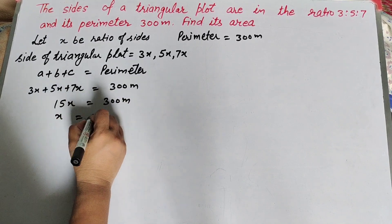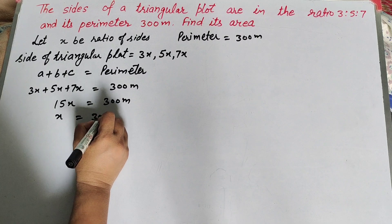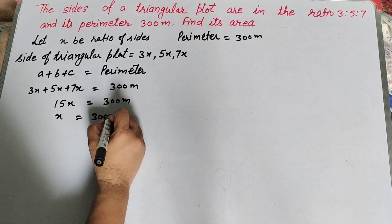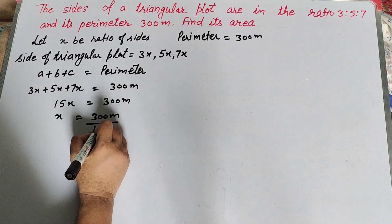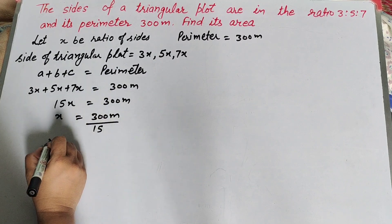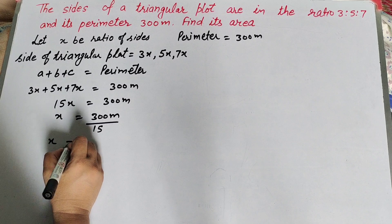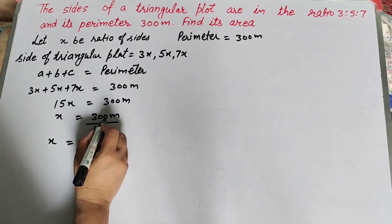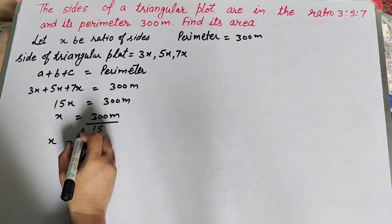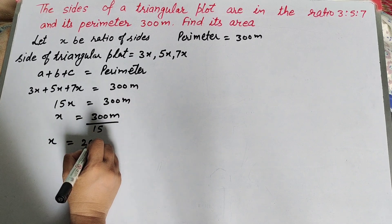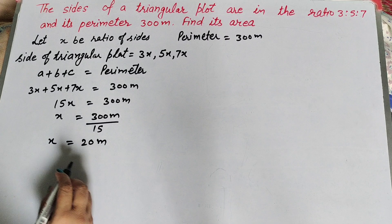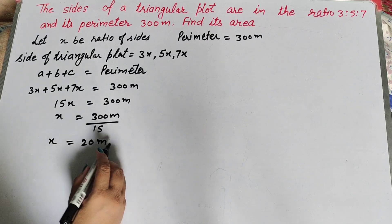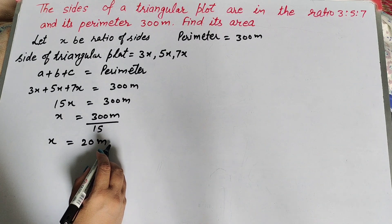So x is equal to 300 meters divided by 15, which gives us x equal to 20 meters.